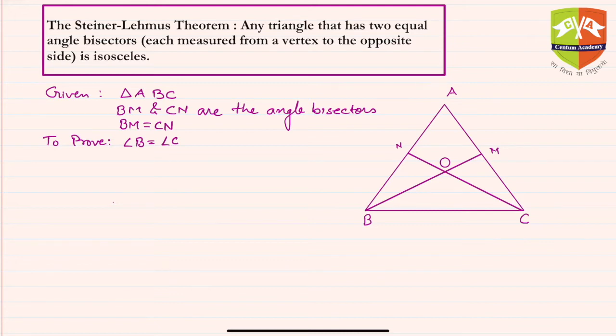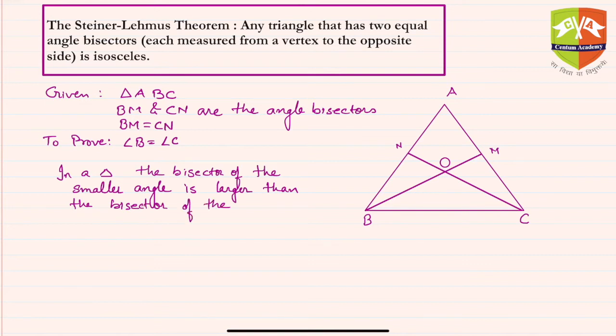So it suggested that in a triangle, the bisector of the smaller angle is larger than the bisector of the greater angle. This is what we learned in the previous session.